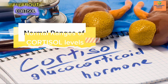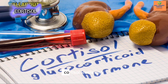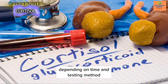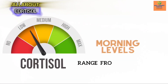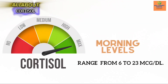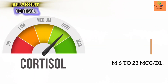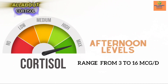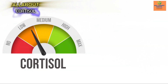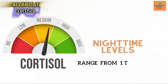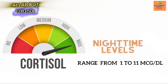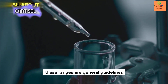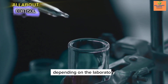Normal ranges of cortisol levels vary depending on time and testing method. Morning levels range from 6 to 23 mcg per deciliter, while afternoon levels range from 3 to 16 mcg per deciliter. Nighttime levels decrease to 1 to 11 mcg per deciliter. These ranges are general guidelines and can vary depending on the laboratory.